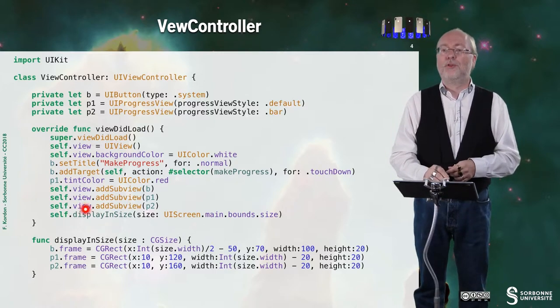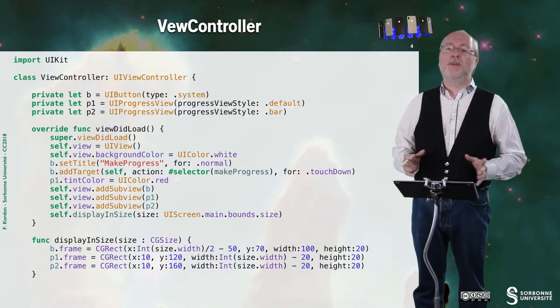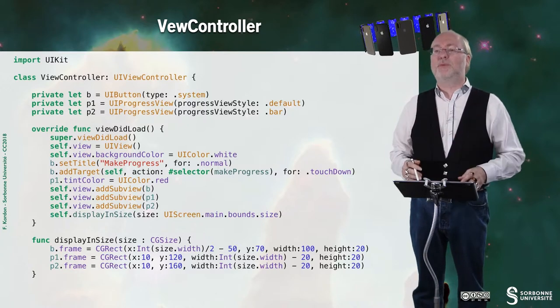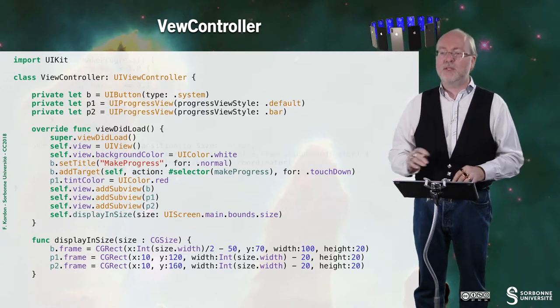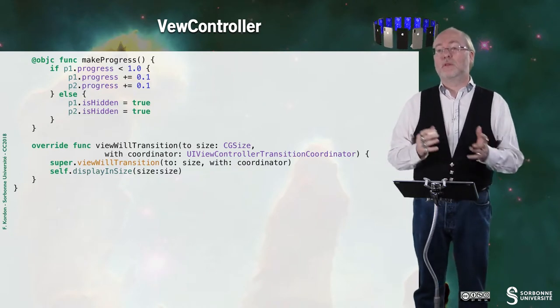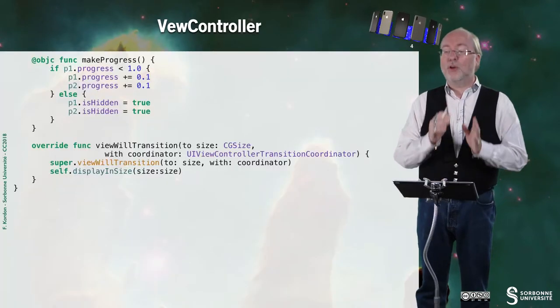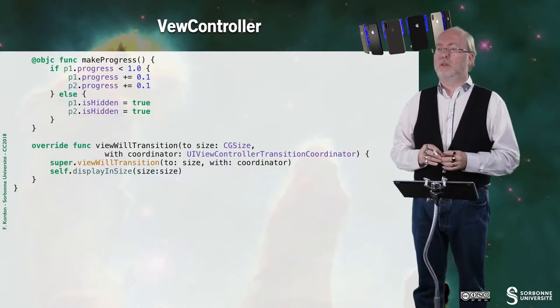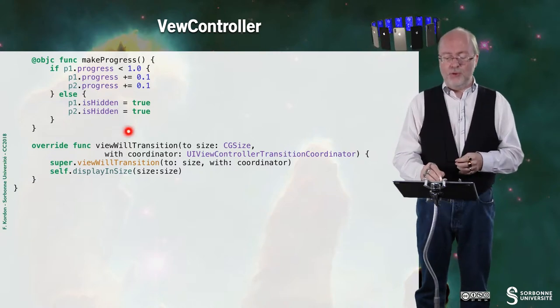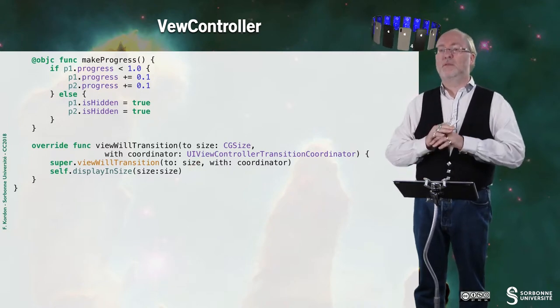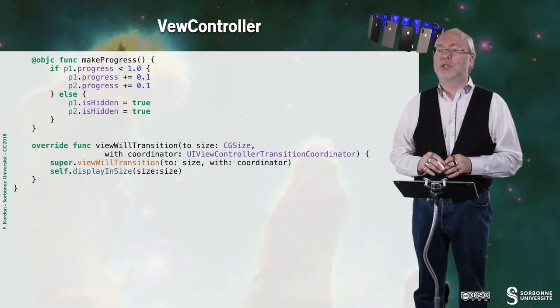I have the viewDidLoad that basically sets up everything. I have the display function that also sets everything up. And you have the function associated to the button that makes progress, increasing by 10% each time for both bars. If the progress bar has already reached 100%, or the value 1, then you just hide it.